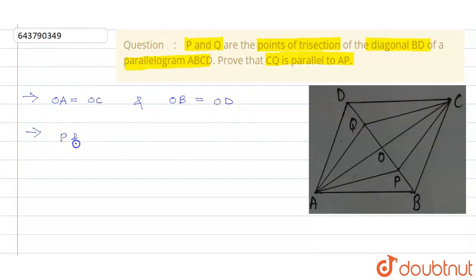Then, P and Q are points of trisection of BD. Therefore, BP is equals to PQ is equals to QD.